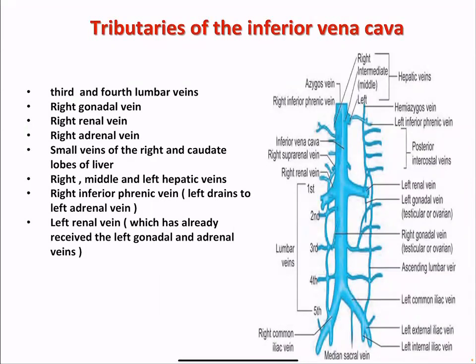Tributaries of the IVC include the third and fourth lumbar veins, the right gonadal vein, the right adrenal vein, small veins to the right and caudate lobes of the liver, the right, middle, and left hepatic veins, the right inferior phrenic vein, the left inferior phrenic vein draining to the left adrenal, and the left renal vein which also receives blood from the left adrenal and the left gonadal vein.